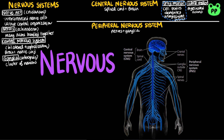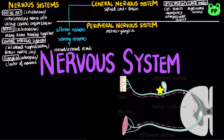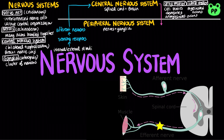The peripheral nervous system transmits information to and from the central nervous system and regulates movement and the internal environment. When an internal or external stimulus activates the sensory receptors, the afferent neurons transmit this information to the central nervous system, which processes it. Then efferent neurons transmit information away from the central nervous system.